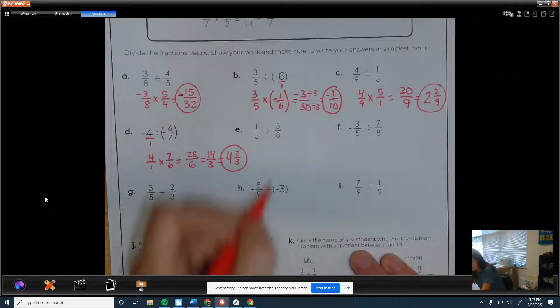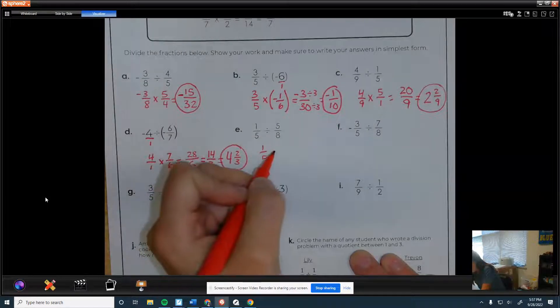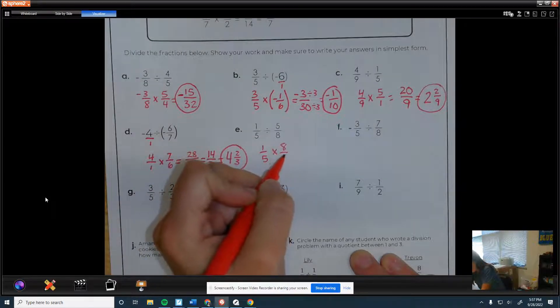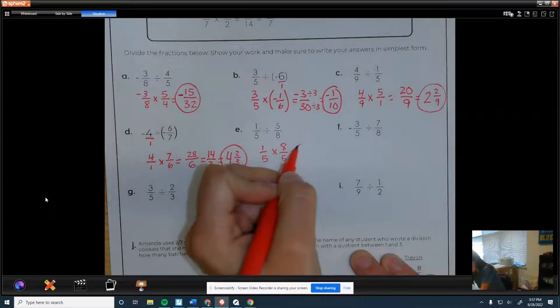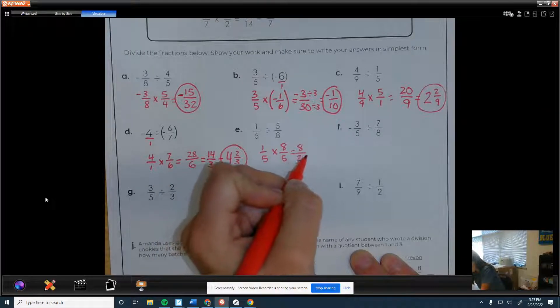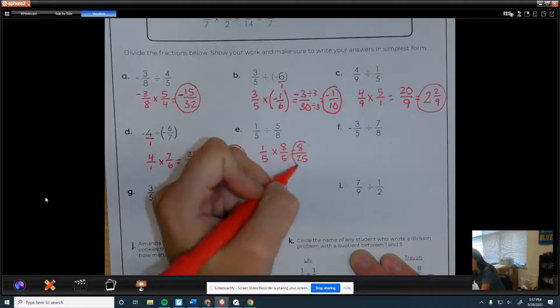Alright, next one. Keep, change, flip. So that would be 8/25. And that cannot be simplified.